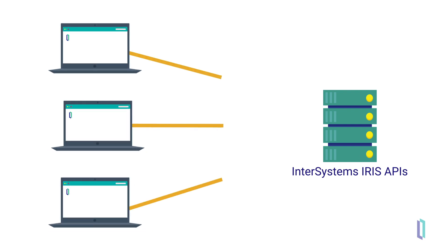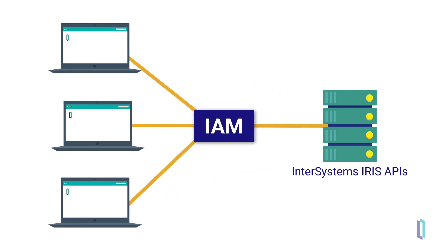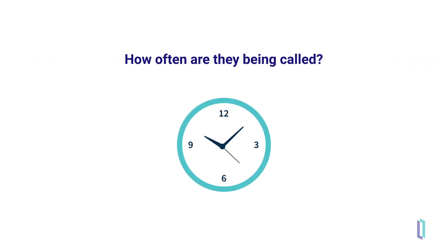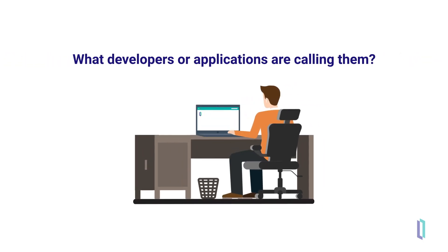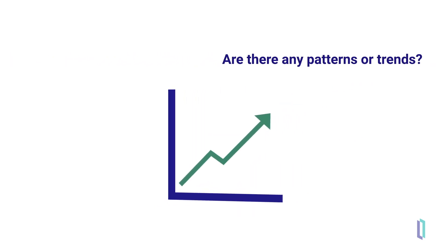Consider the scenario where you are exposing APIs in InterSystems IRIS to various other applications. Using InterSystems API Manager, you can effectively monitor the traffic coming through your gateway to these exposed APIs. What APIs are being called? How often are they being called? What developers or applications are calling them? And are there any patterns or trends to these answers? It's easy and intuitive to monitor these important factors using IAM.